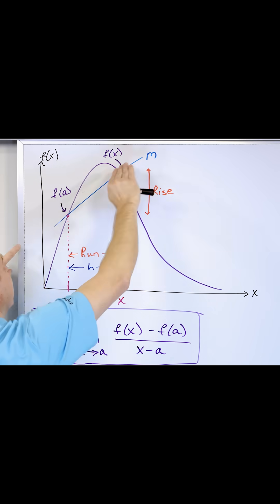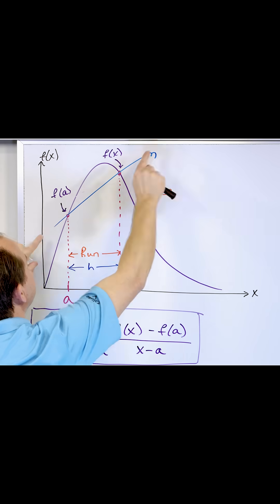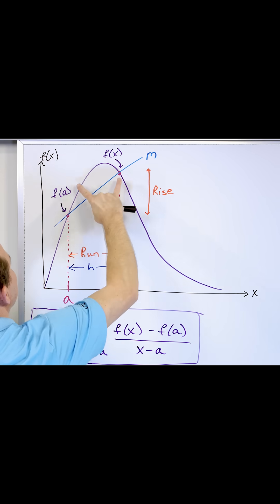If you want to figure out the crude approximation of the slope, you find the slope of the line through those points. Rise over run right here.